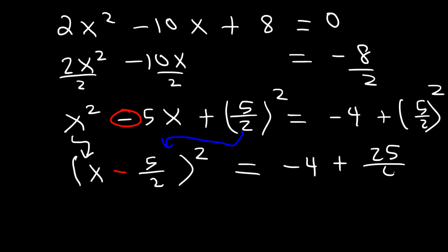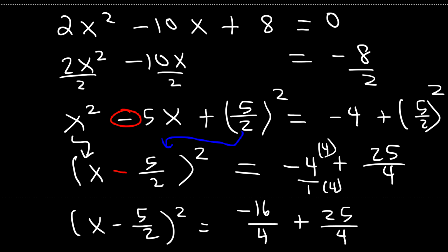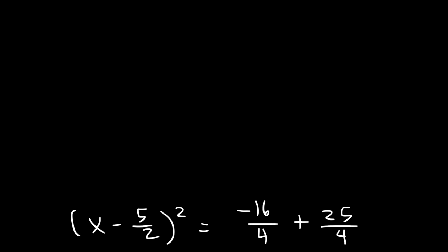5 squared is 25 and 2 squared is 4, so now what we need to do is add these two numbers. Let's get common denominators. Negative 4 is the same as negative 4 over 1, and I'm going to multiply the top and the bottom by 4, so it becomes negative 16 over 4. Negative 16 plus 25 — that's 9. So we have 9 over 4.